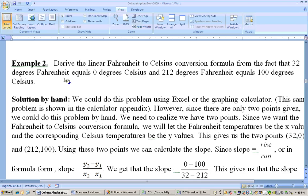Okay, on this example, we're going to derive the linear Fahrenheit to Celsius conversion formula from the fact that 32 degrees Fahrenheit equals 0 degrees Celsius and 212 degrees Fahrenheit equals 100 degrees Celsius.